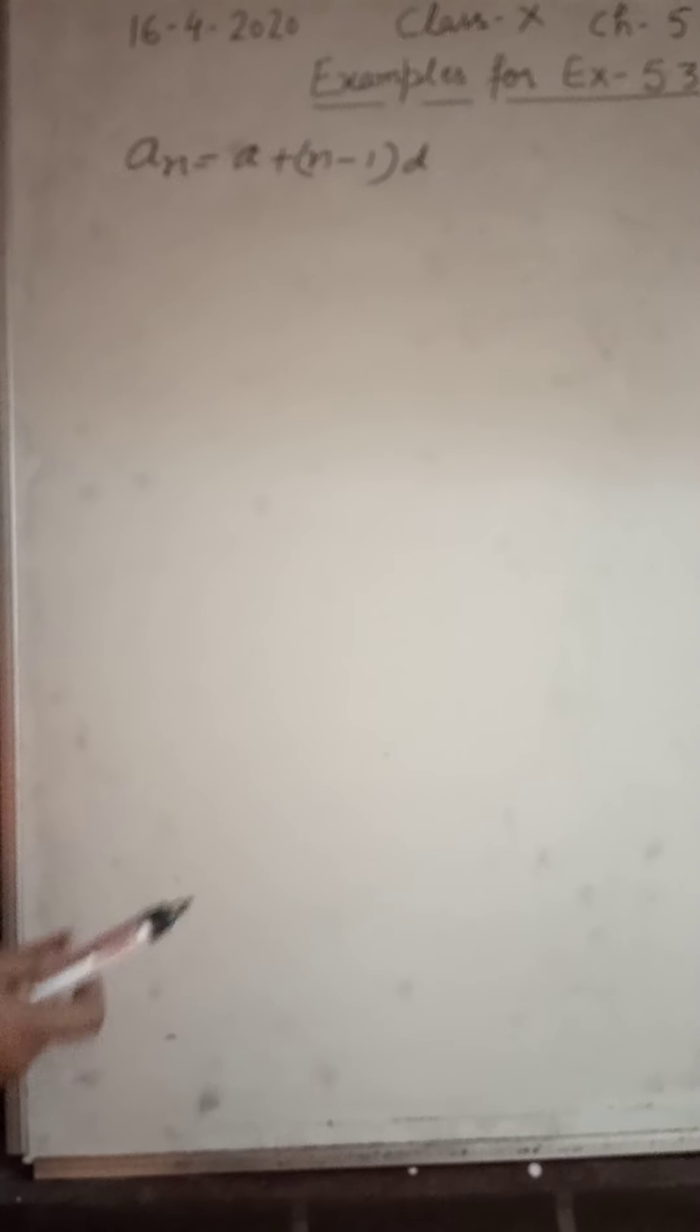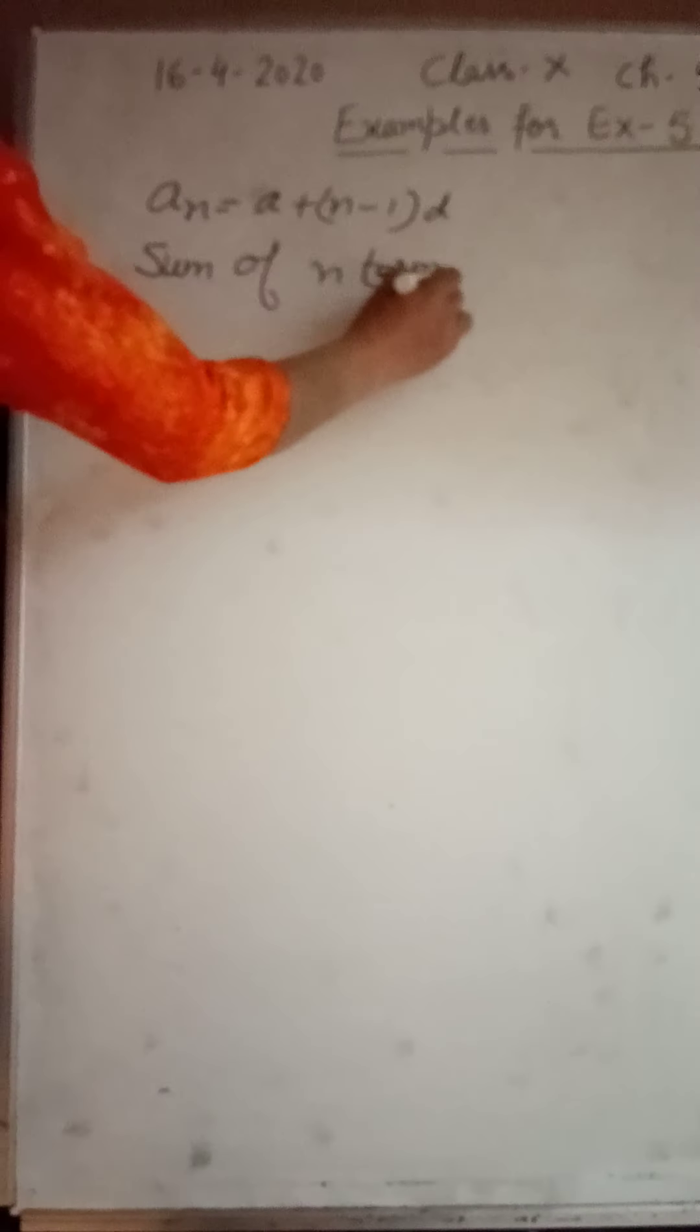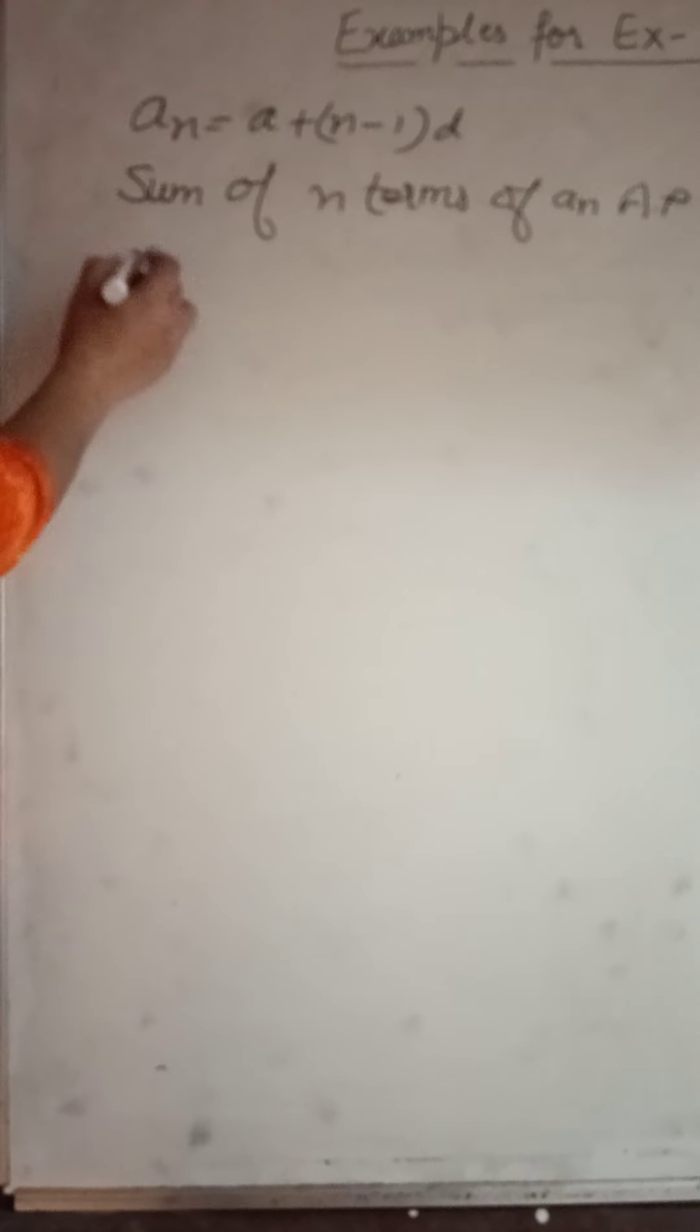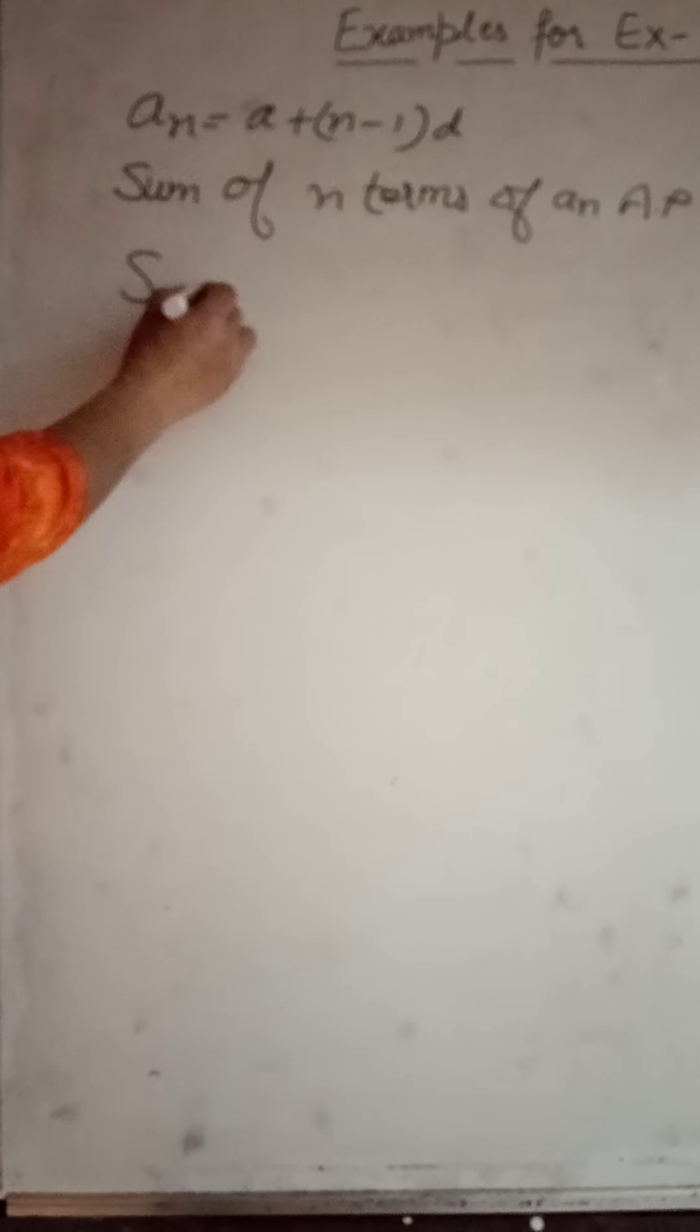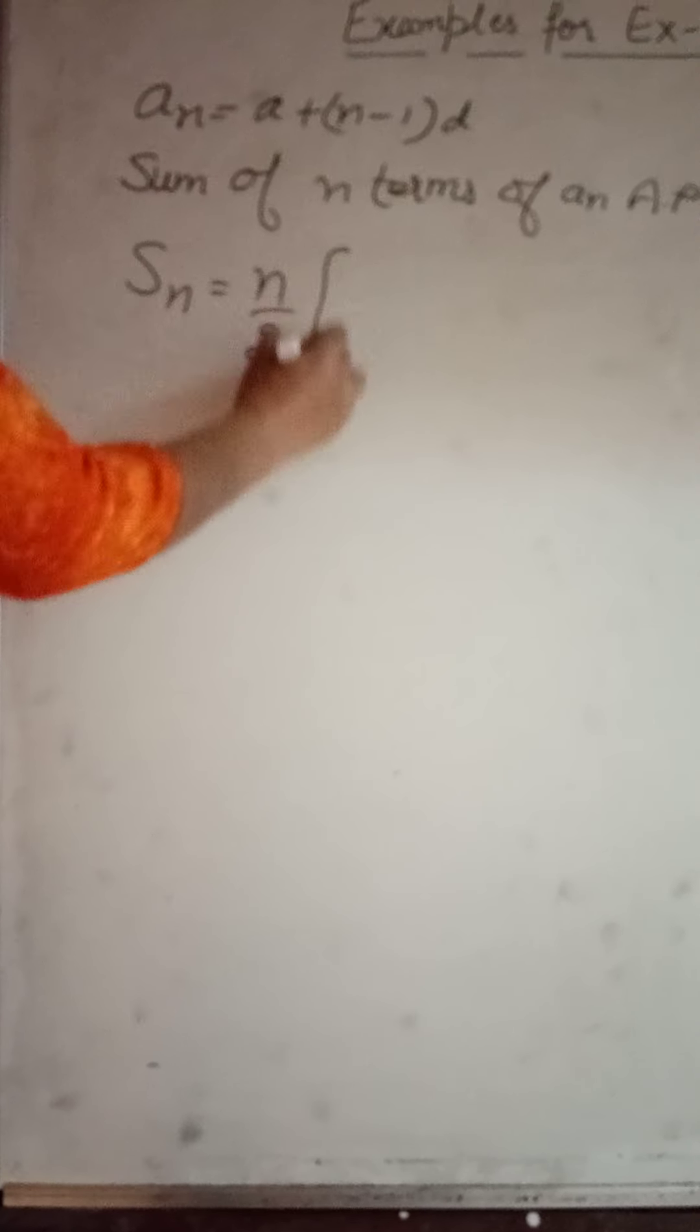Good morning everyone, till now we have learnt how to find n term of a given AP using this formula. Now we will be learning how to find sum of n terms of an AP. For this we will be using this formula where S stands for sum, sum of n terms, n upon 2, 2 into first term plus n minus 1 into d.